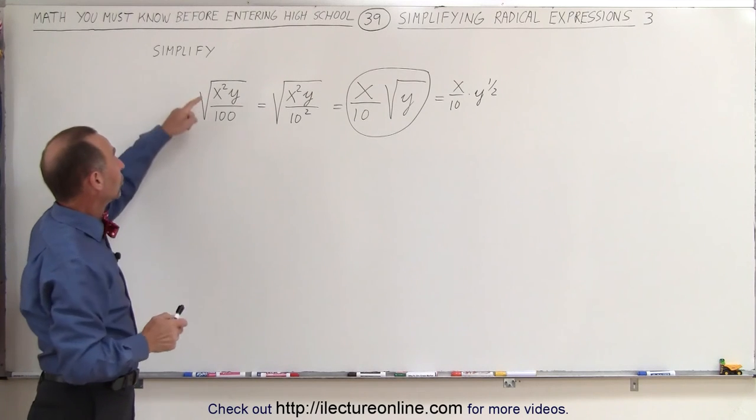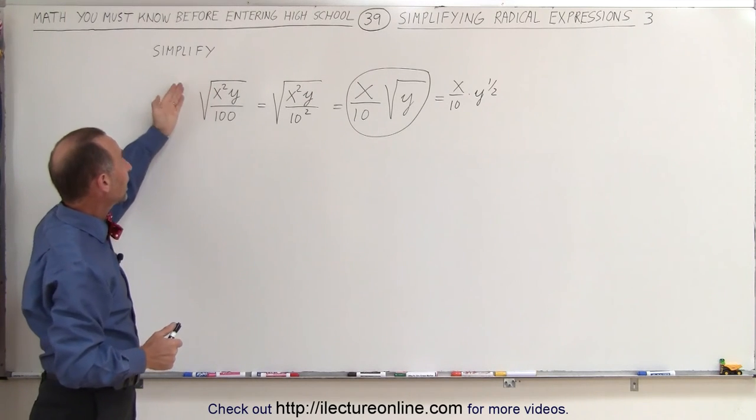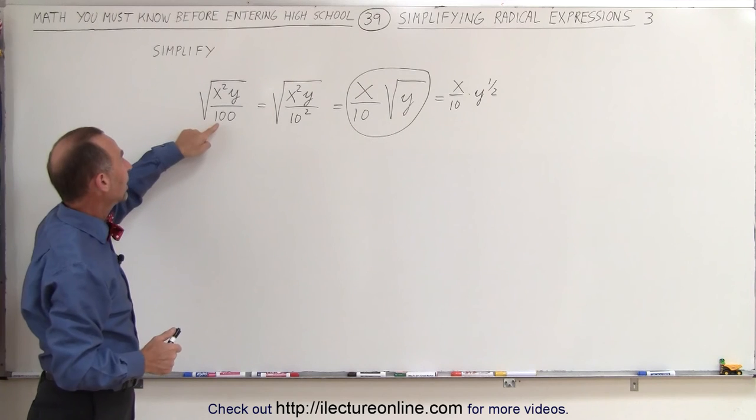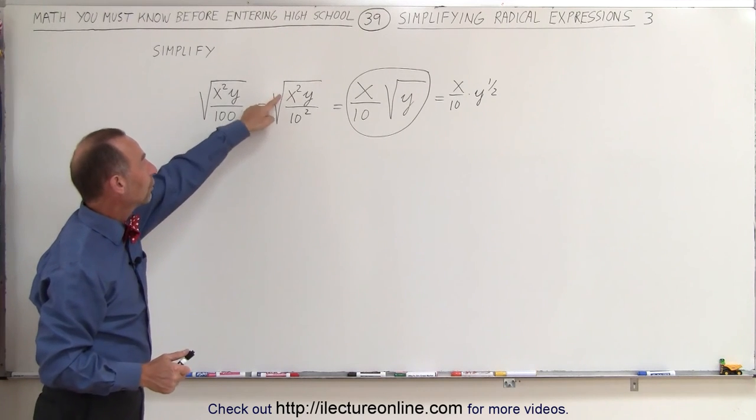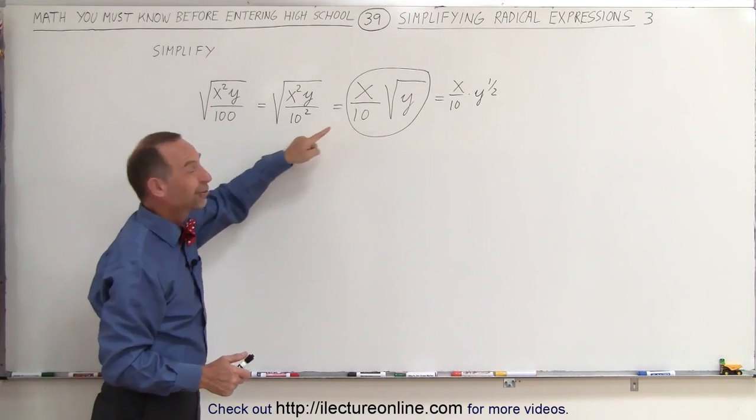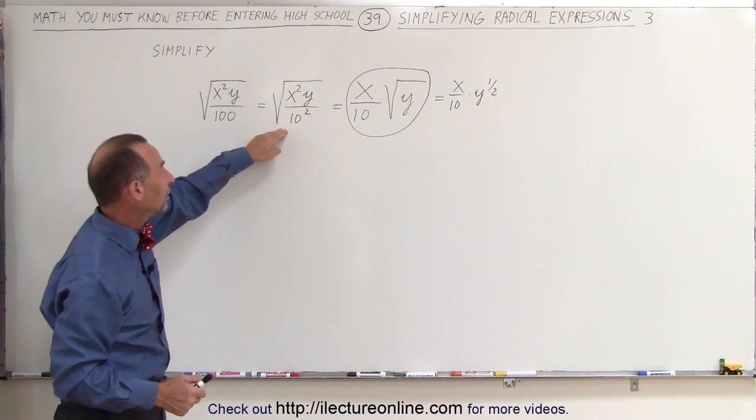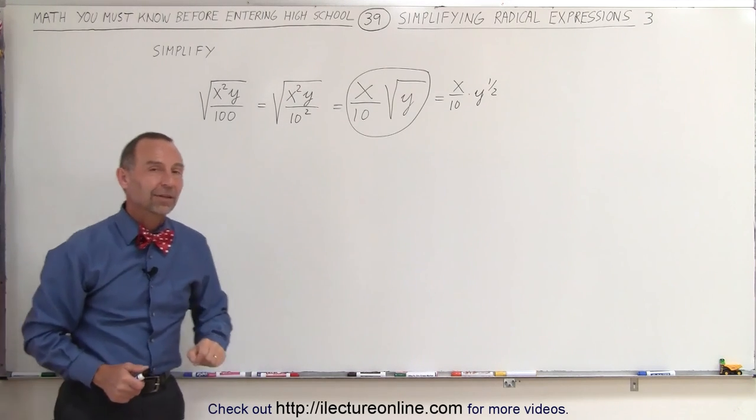Again, the rule is: the square root of something squared, you simply take it outside the radical sign. And here 100 can be written as 10², the square root of 10² can be written as 10. Of course, since this is the denominator, it should stay in the denominator like that.